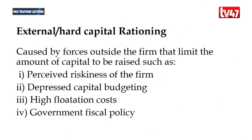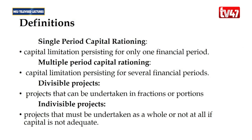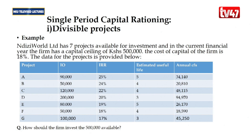Key definitions include: single period capital rationing — where the limitation of capital is for only one financial period; multiple period capital rationing — where it persists over several periods; divisible projects — which can be undertaken in fractions or portions; and indivisible projects — which cannot be split, meaning you must invest in the entire project.